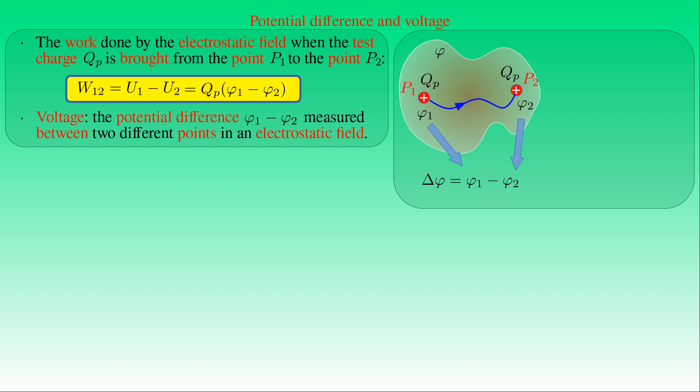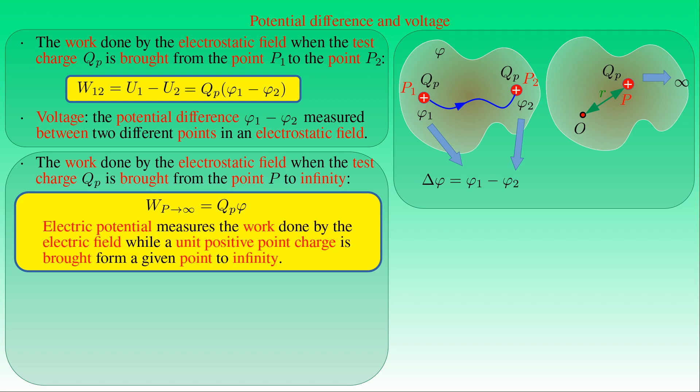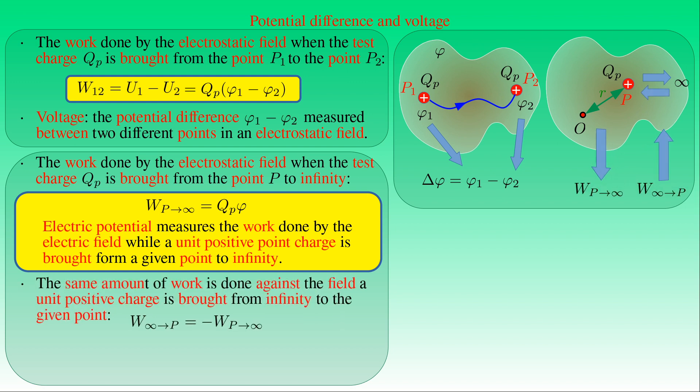If the test charge QP is brought from point P, where the potential is phi, to infinitely far away, the work W done by the electric field equals QP times phi. Therefore the electric potential phi at a given point measures the work done by the electric field while a unit positive point charge is brought from that point to infinity. Of course, the same amount of work is done against the electric field when a unit positive point charge is brought from infinity to that point.